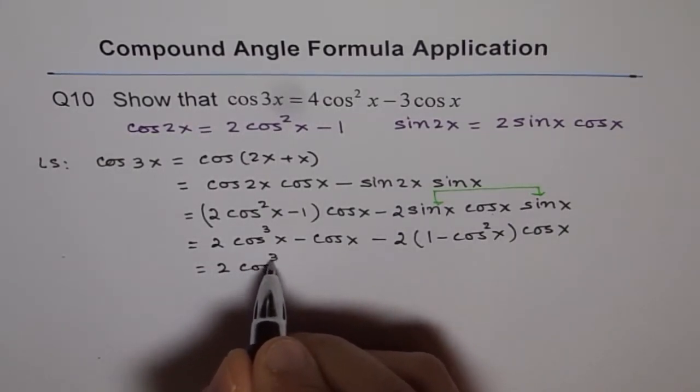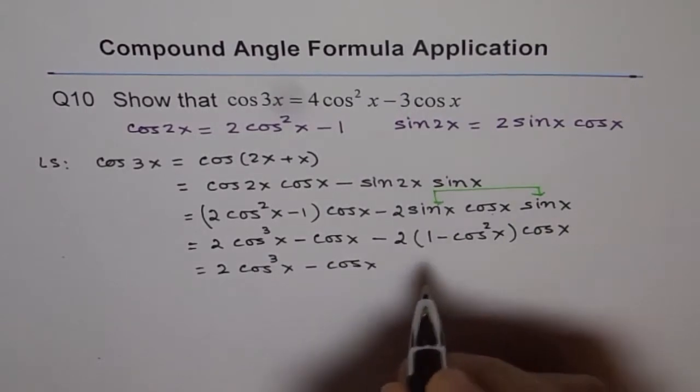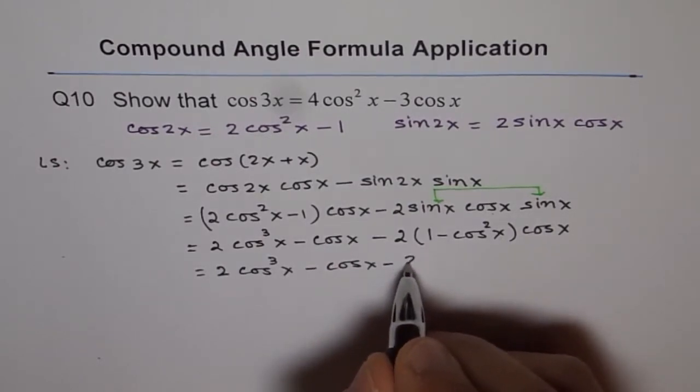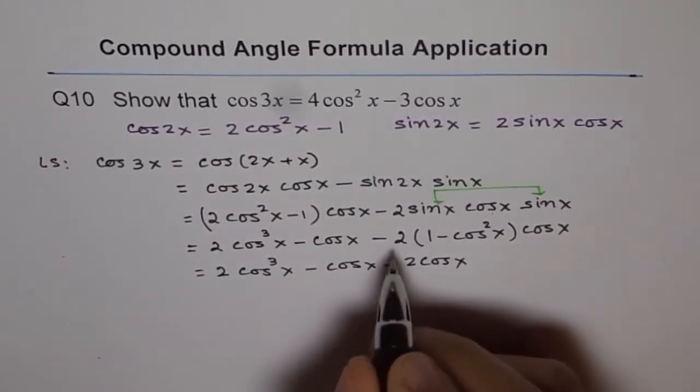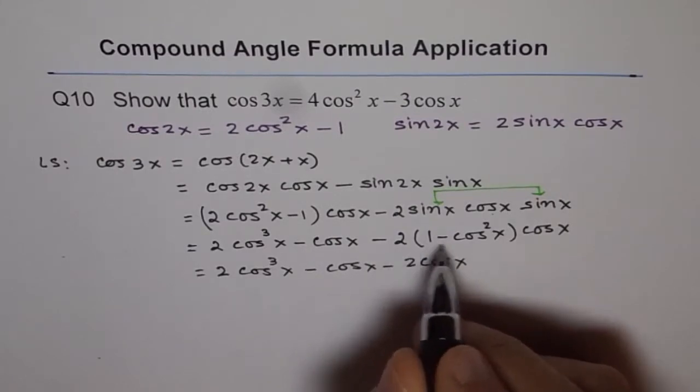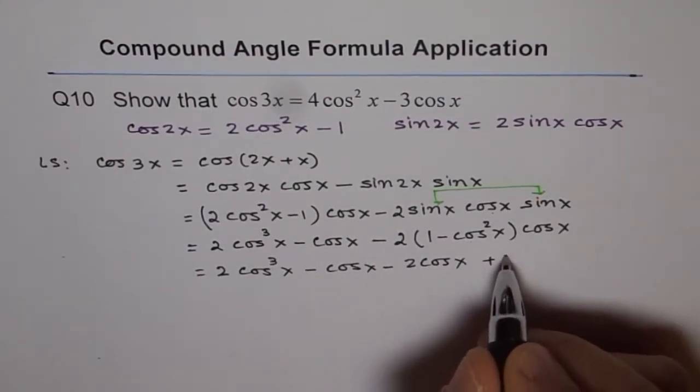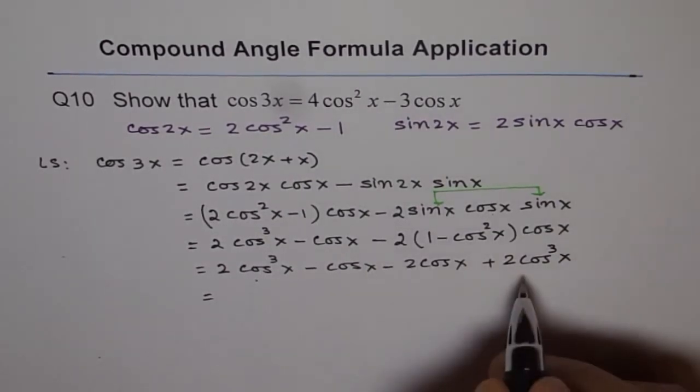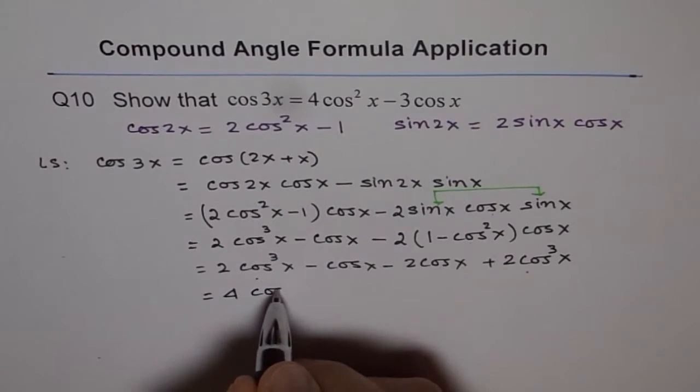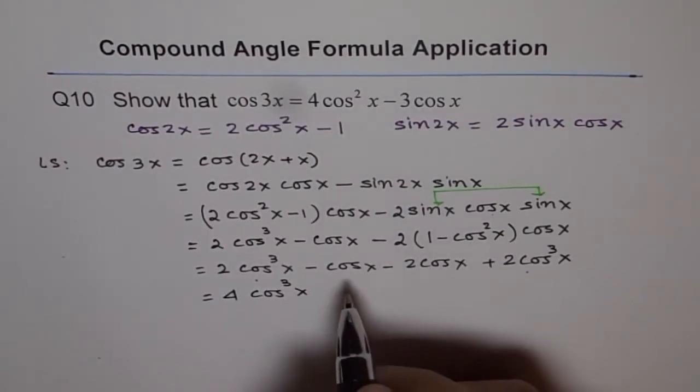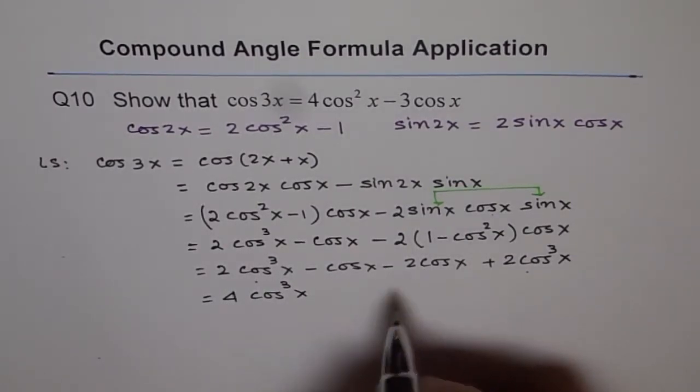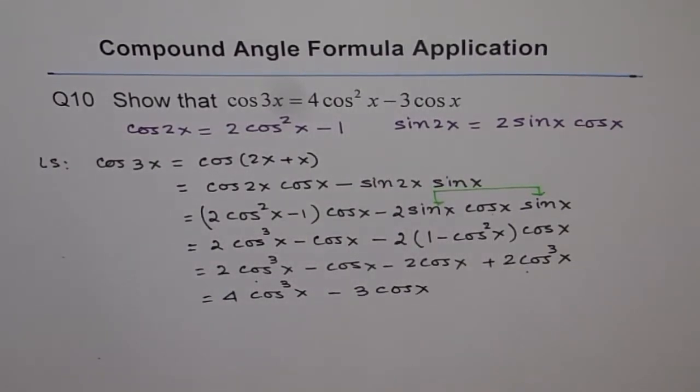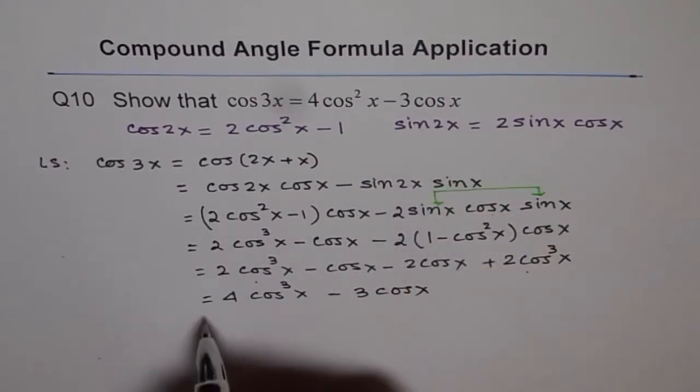We have cos cubed x minus cos x, and this is 2 cos x times 1, which is minus 2 cos x. And this minus and minus becomes plus 2 cos cubed x. Now 2 cos cubed x and 2 cos cubed x gives us 4 cos cubed x, and here we have minus cos x and minus 2 cos x, that gives us minus 3 cos x, and that is what the right side is.